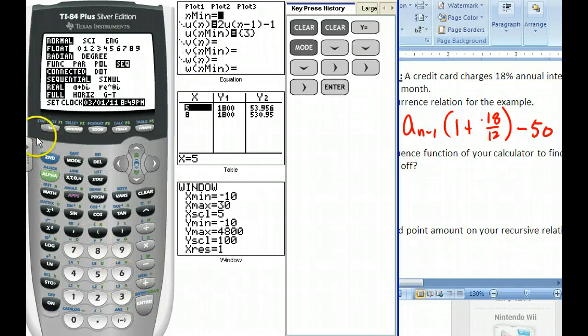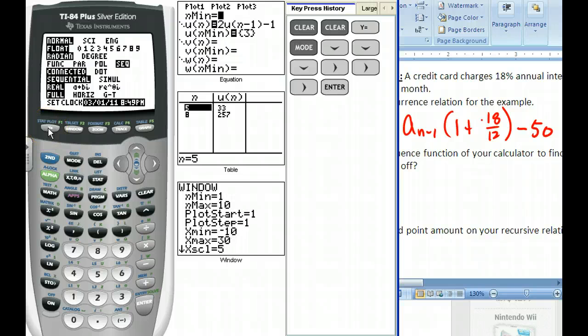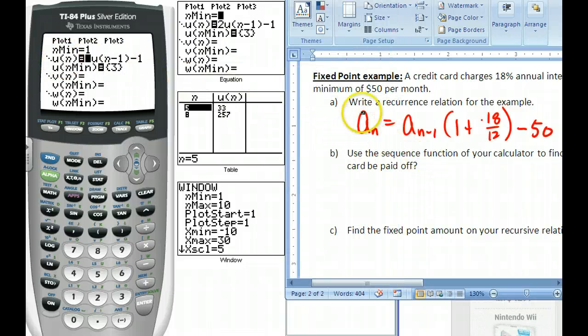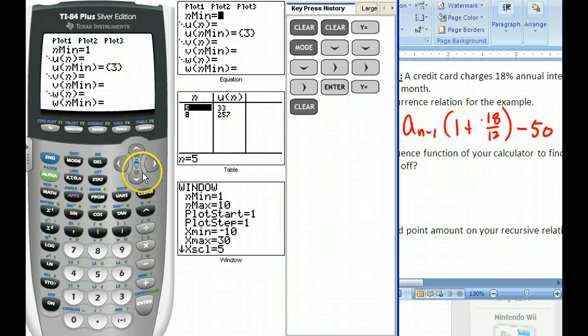And then when we push y equals, it's going to change everything quite a bit. And so I have this n minimum and all this other stuff. Well, this u_n, that is the same thing as a_n. It's the same thing as this right here. The calculator just can't put this subscript in there. And then if I have n minus 1 as a subscript, I've got to put it in parentheses. So let's clear this out and show you how to do this.